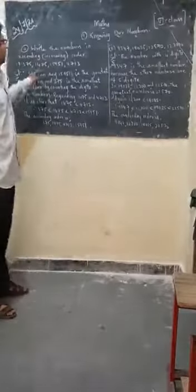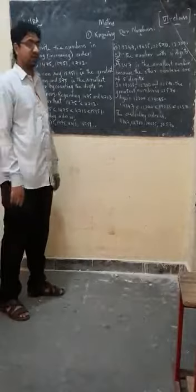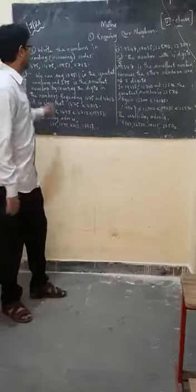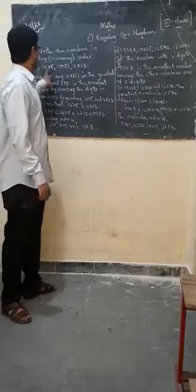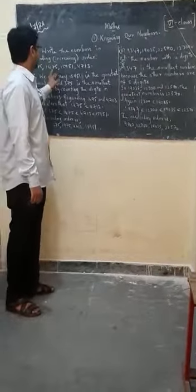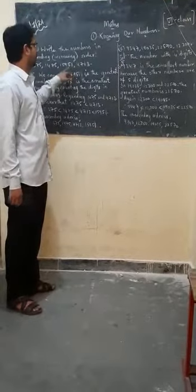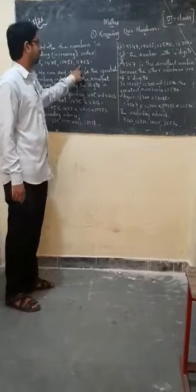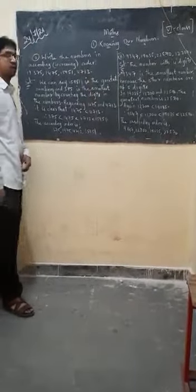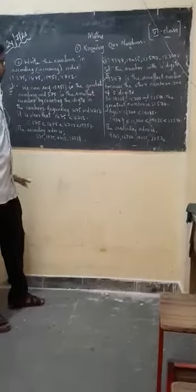Now listen. Write the numbers in ascending or increasing order. What we have to do? We have to write the numbers in ascending or increasing order. How we are writing now? 357, 1475, next 15951, next 1651, next 41730. We have to write it in the ascending order.